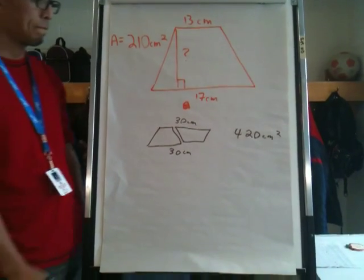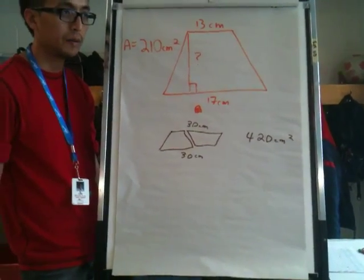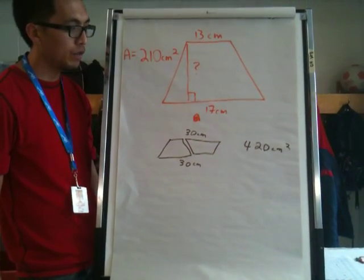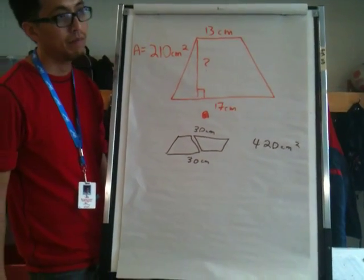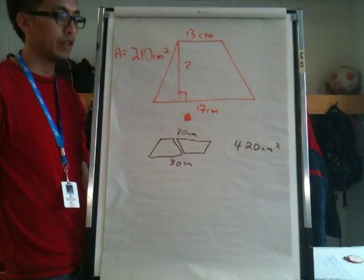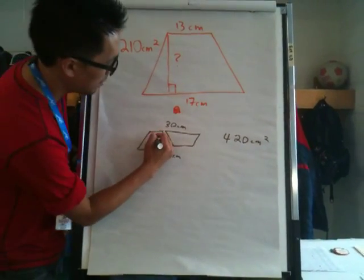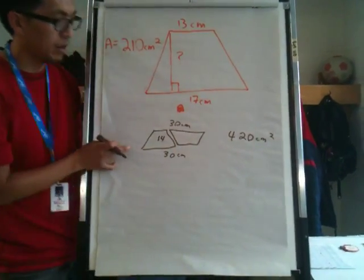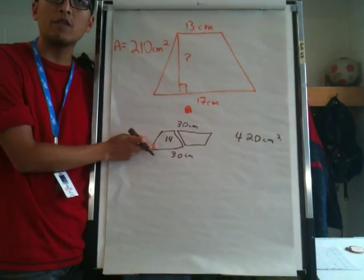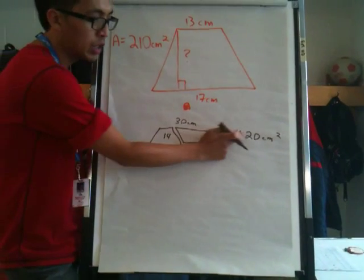So 420 divided by 30. 14, right? So now we know that because when we find out the area of a parallelogram, it's base times height, 30 times 14 is 420.